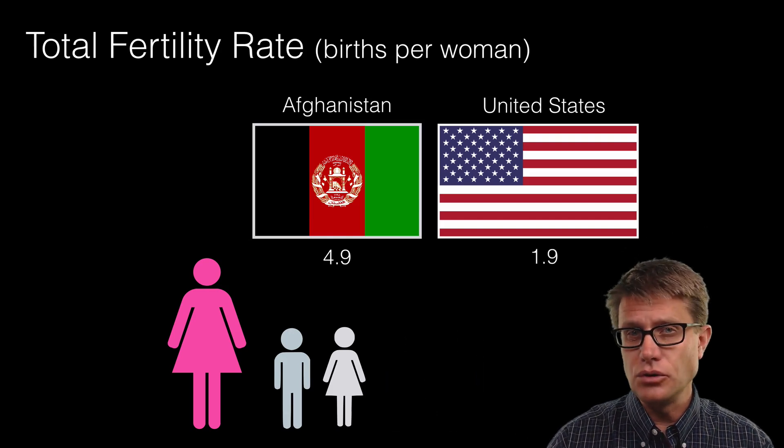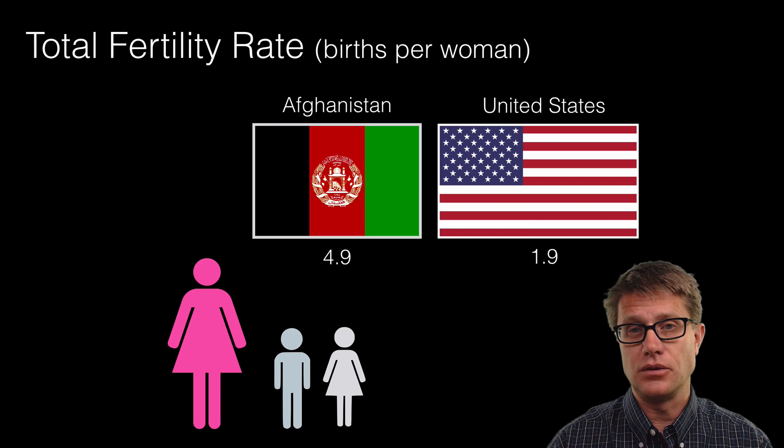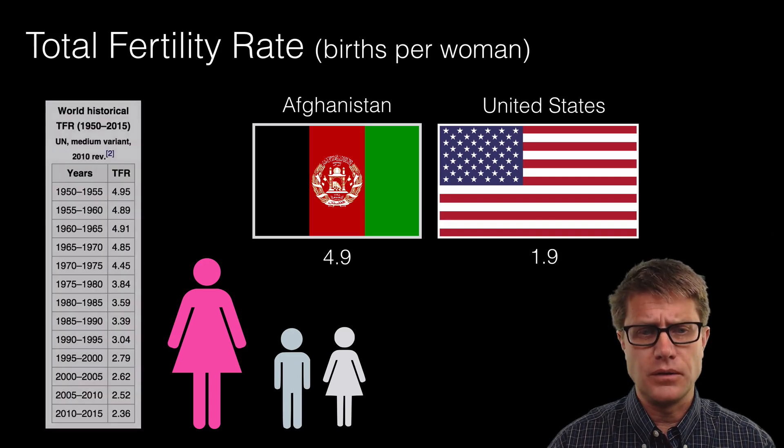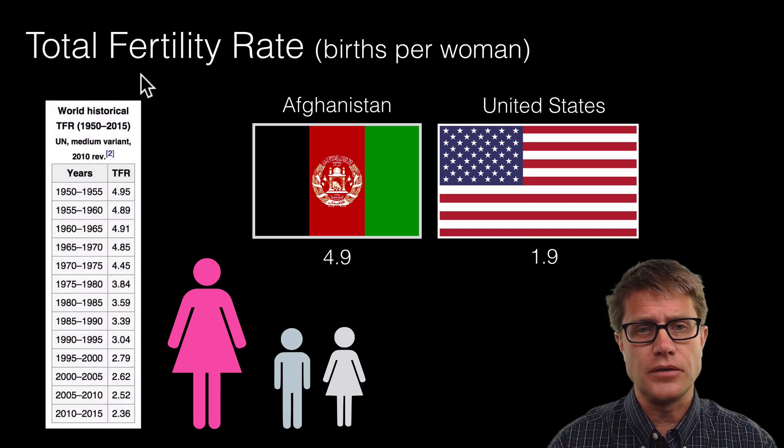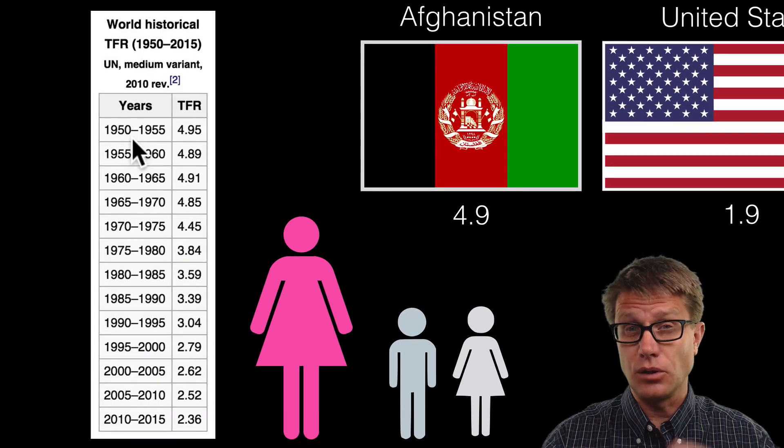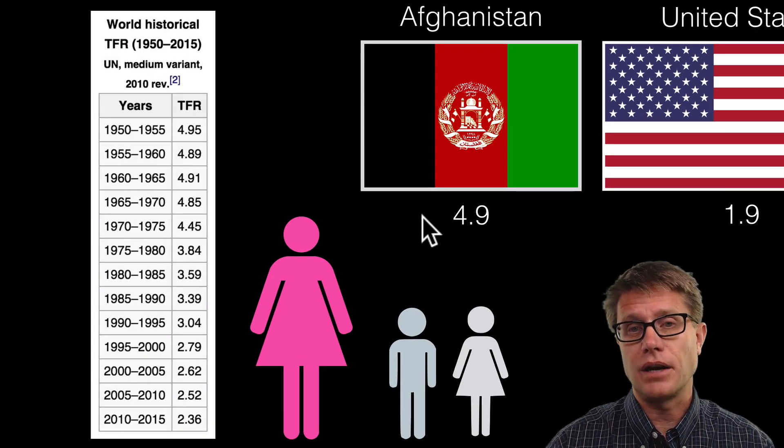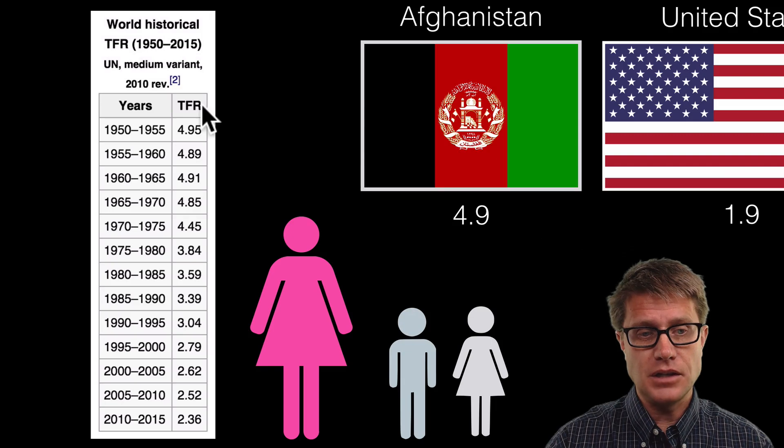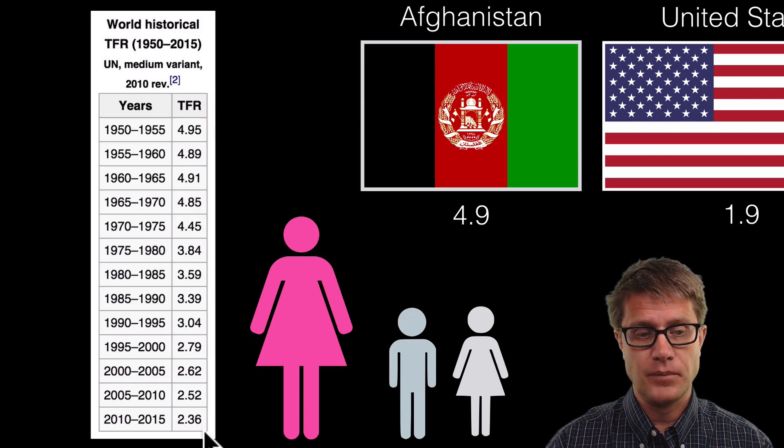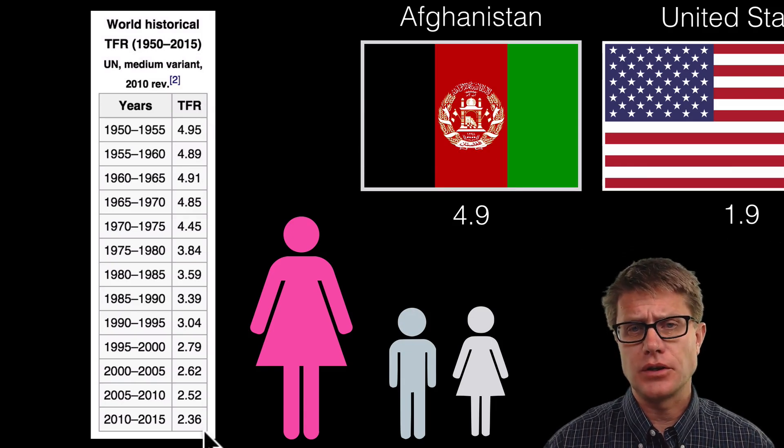So why do we see such a huge difference between Afghanistan and the U.S.? Well let us talk globally for a second. So the TFR, total fertility rate back in 1950, globally around the world was 4.9. So it is closer to what Afghanistan is today. And you can see that it has decreased over time. So why do we see this decrease over time?